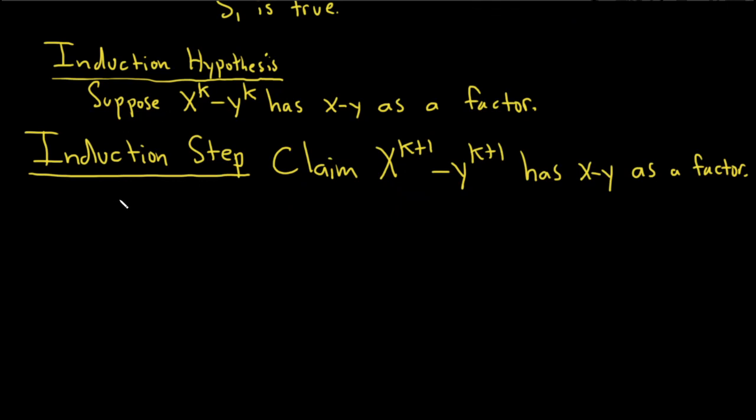So let's show it. So I think the best way to do it is just to write down this and then show it. So then we'll have to do some trickery, but I think we'll be able to do it. x to the k plus 1 minus y to the k plus 1.